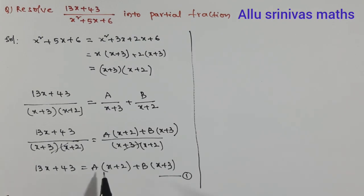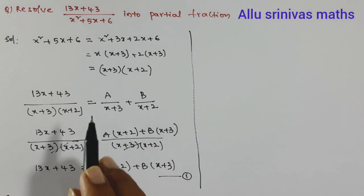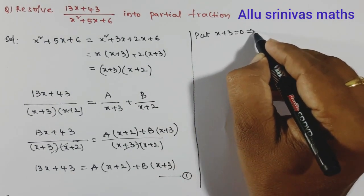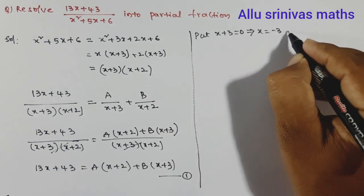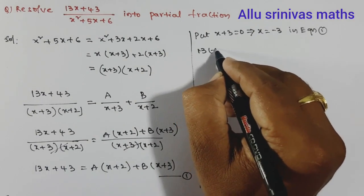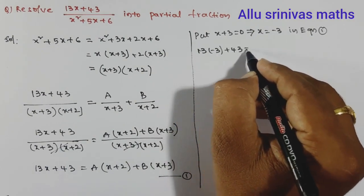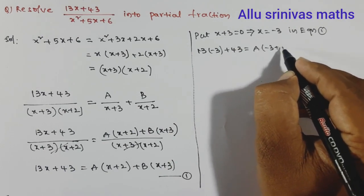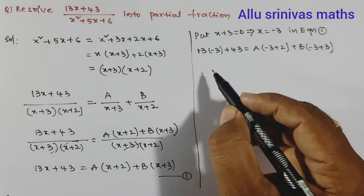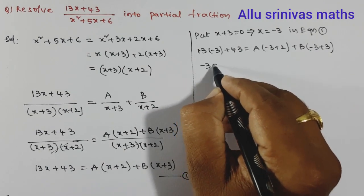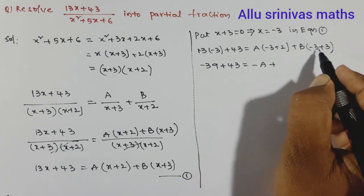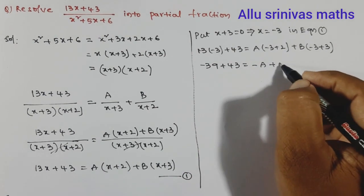To find A, take the first factor x+3 and put x+3=0, so x = -3. Substituting into equation 1: 13(-3)+43 = A(-3+2) + B(-3+3). That gives -39+43 = A(-1) + B(0). The B term vanishes, so 4 = -A.